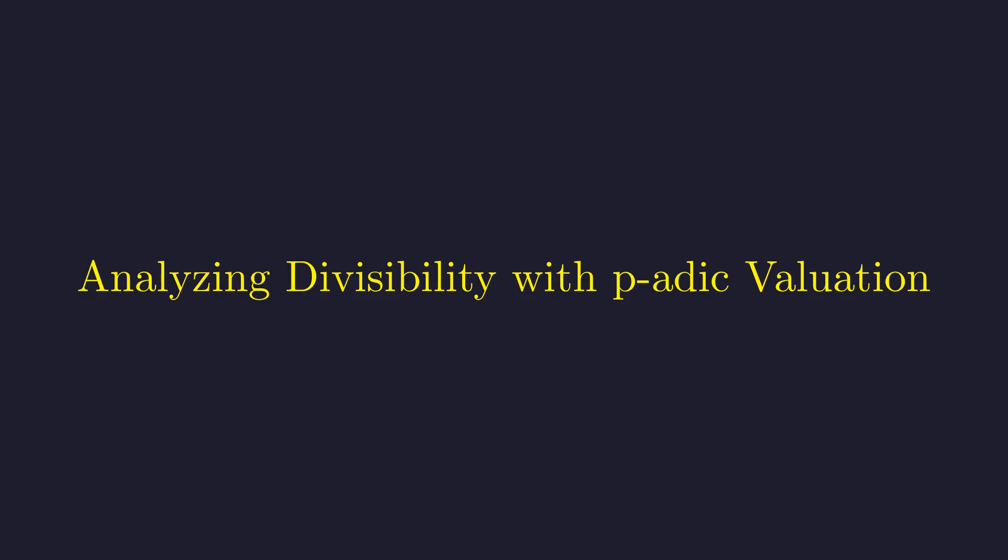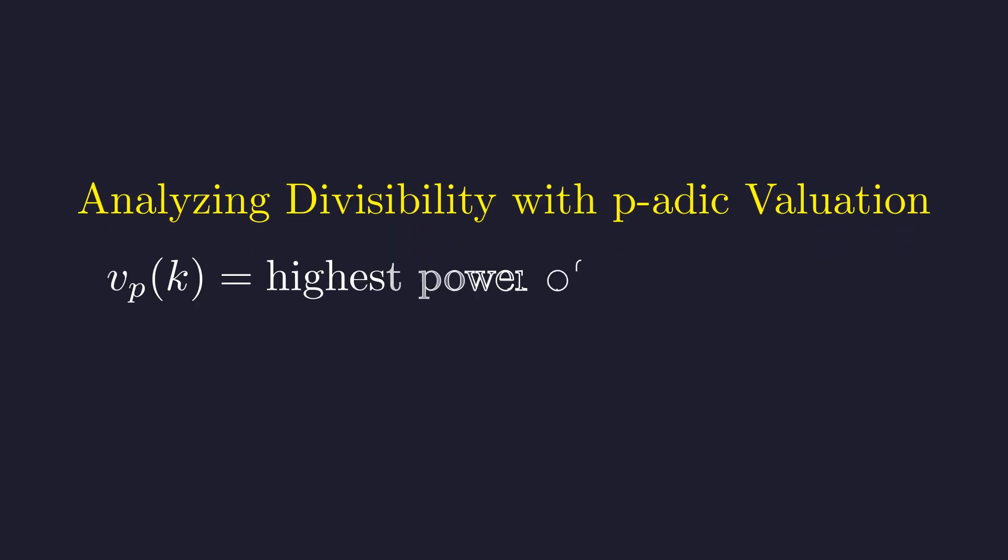Now we introduce a powerful tool: p-adic valuation. This will be the key to further constraining the problem. The p-adic valuation of k, denoted v_p(k), is the exponent of the highest power of the prime p that divides k. For example, v_3(18) is 2 because 18 equals 2 times 3^2.